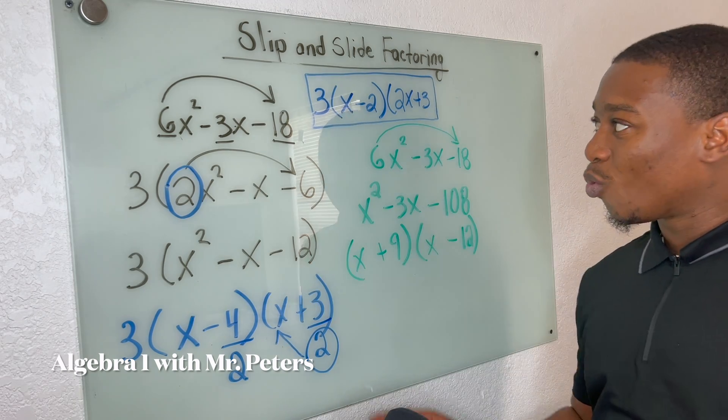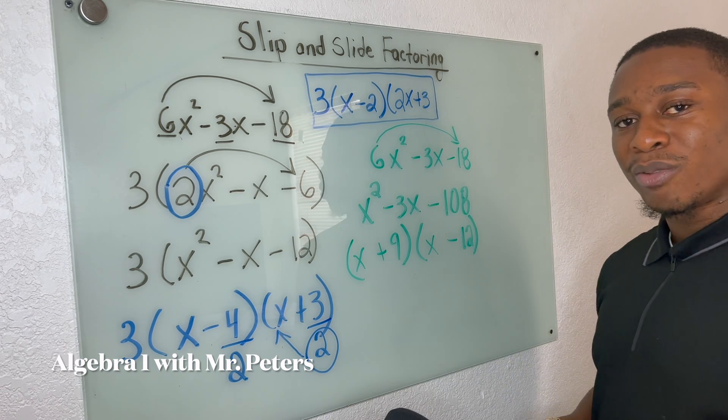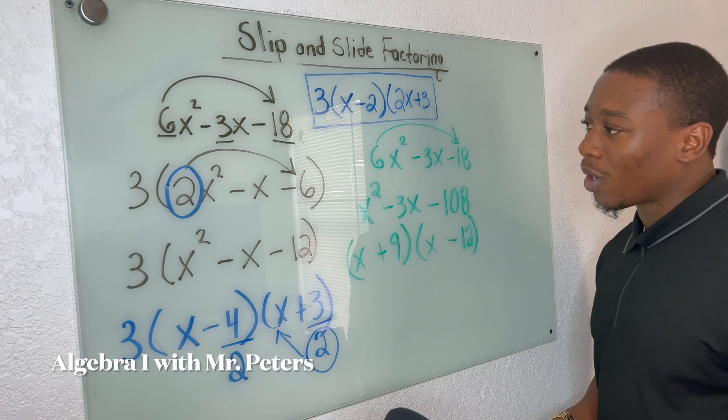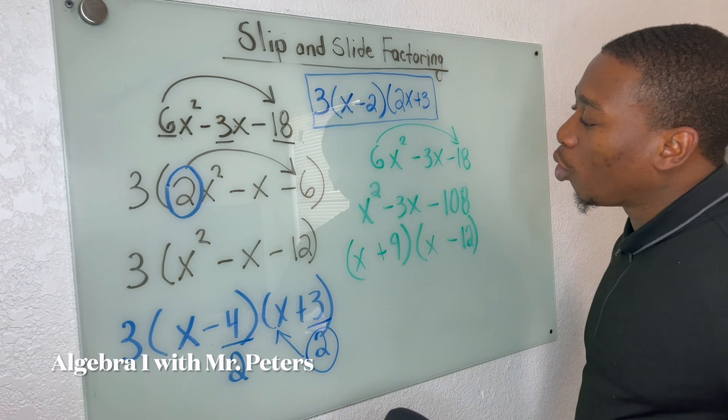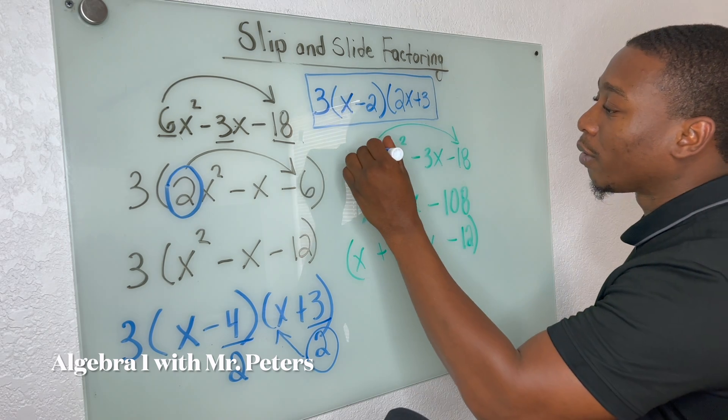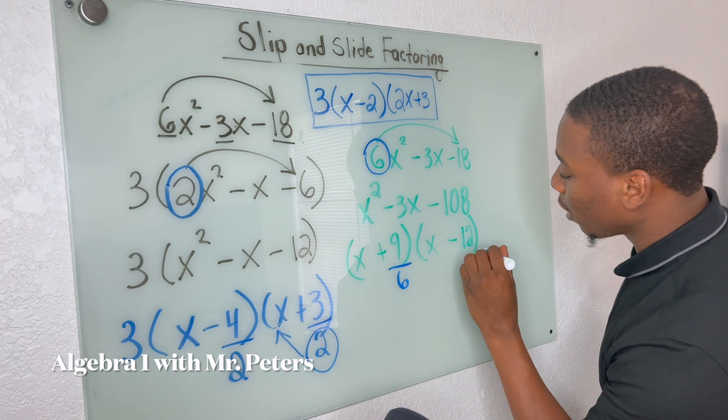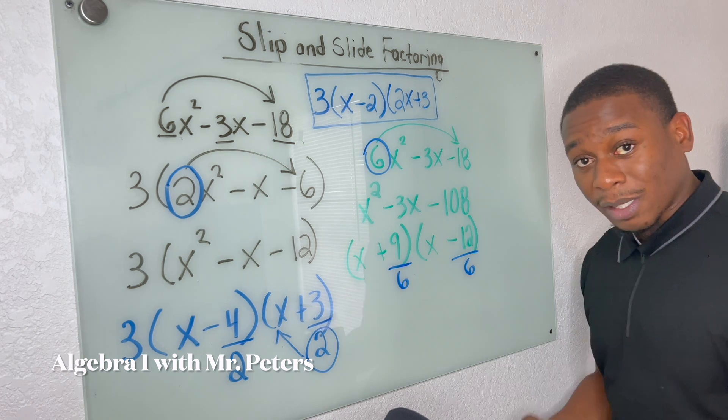So now, we know this is the answer. How are we going to get there, Mr. Peters? I'm glad you guys asked. So we're now going to go through and repeat that step where we divide. So let's divide our factors by six. That's what we multiply for in a slip and slide.